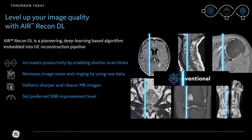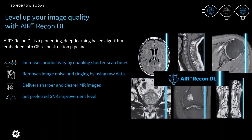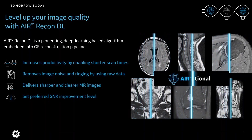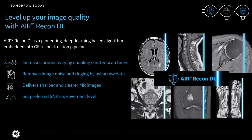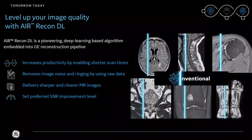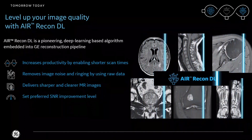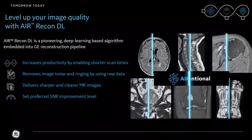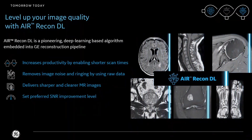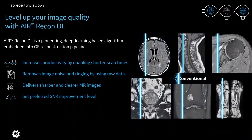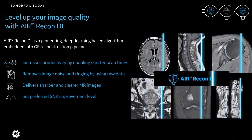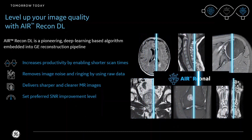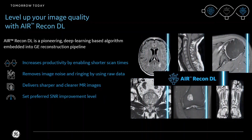AIR Recon DL is a pioneering deep learning based algorithm embedded into the GE reconstruction pipeline that works across all anatomies and contrasts. It removes image noise and ringing during image reconstruction, which in turn increases productivity by enabling shorter scan times. AIR Recon DL delivers sharper and clearer MR images by taking advantage of the true fidelity of the MR signal. It is flexible and allows users to program the preferred SNR improvement as part of the protocol.